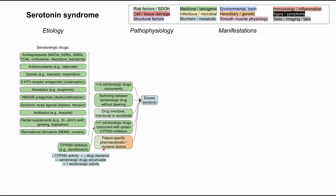There are also patient-specific pharmacokinetic and pharmacodynamic factors that might be at play. These are not super well understood yet — they're largely genetic and hereditary — but they can predispose somebody to serotonin syndrome. For example, you can have a genetic reason for decreased CYP450 activity, or a polymorphism in the serotonin receptor that makes it extra sensitive to an otherwise normal dose of an antidepressant.